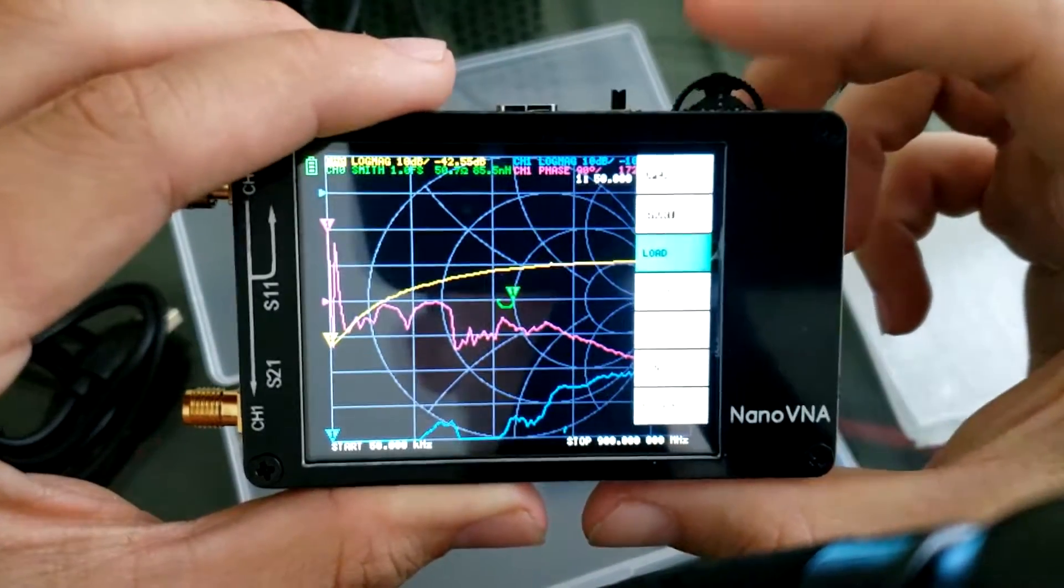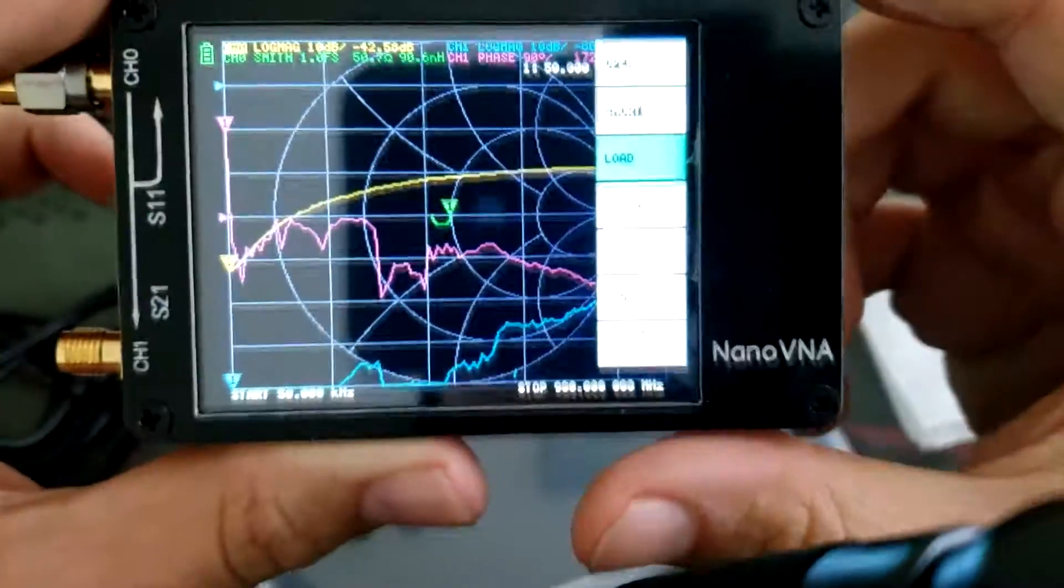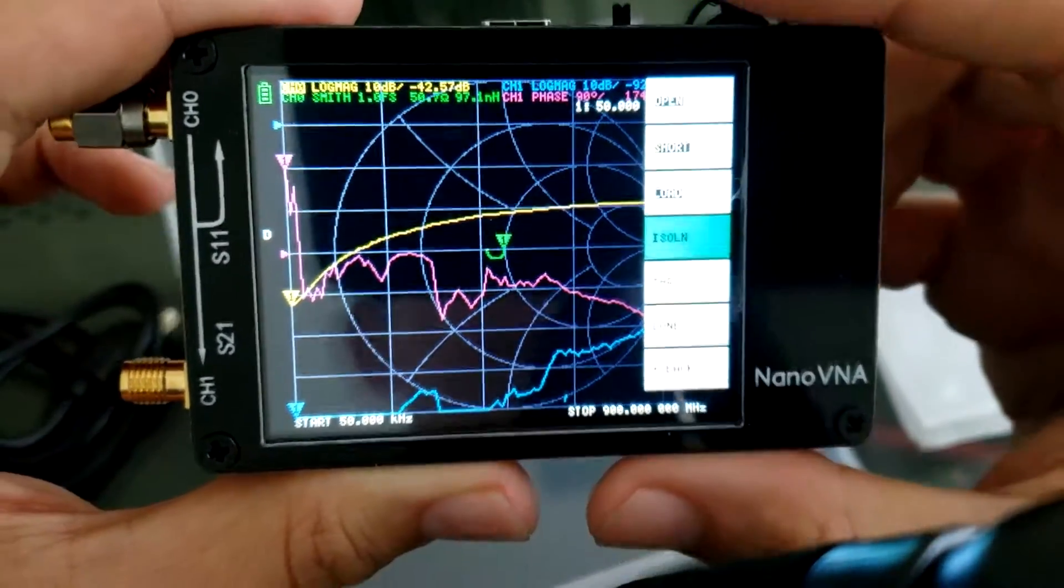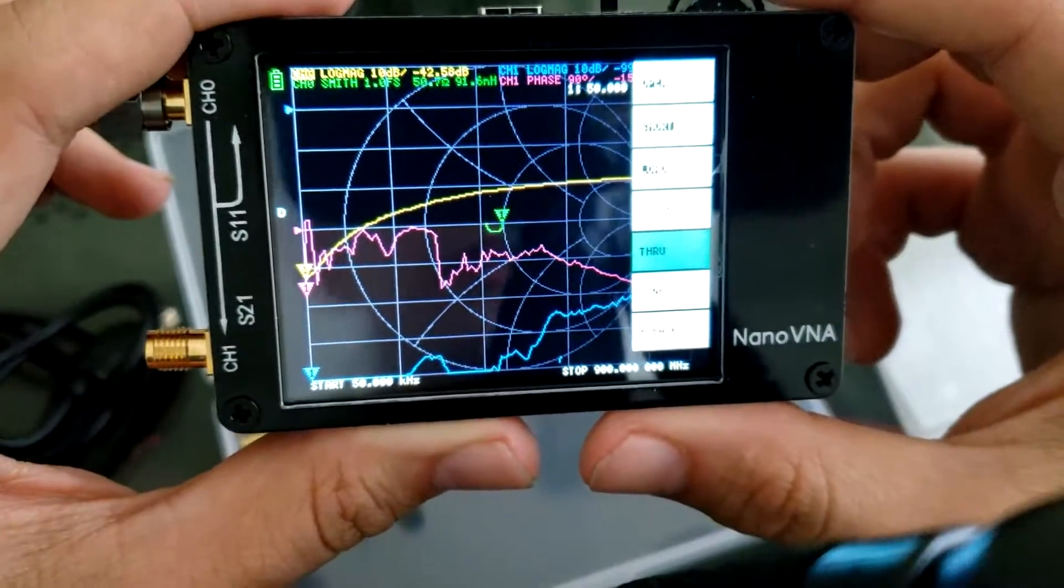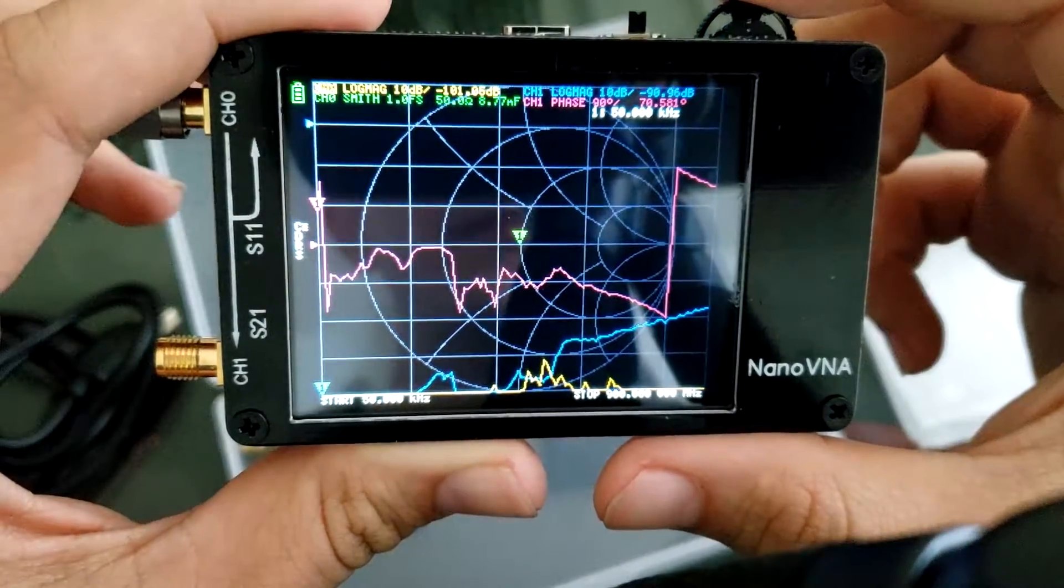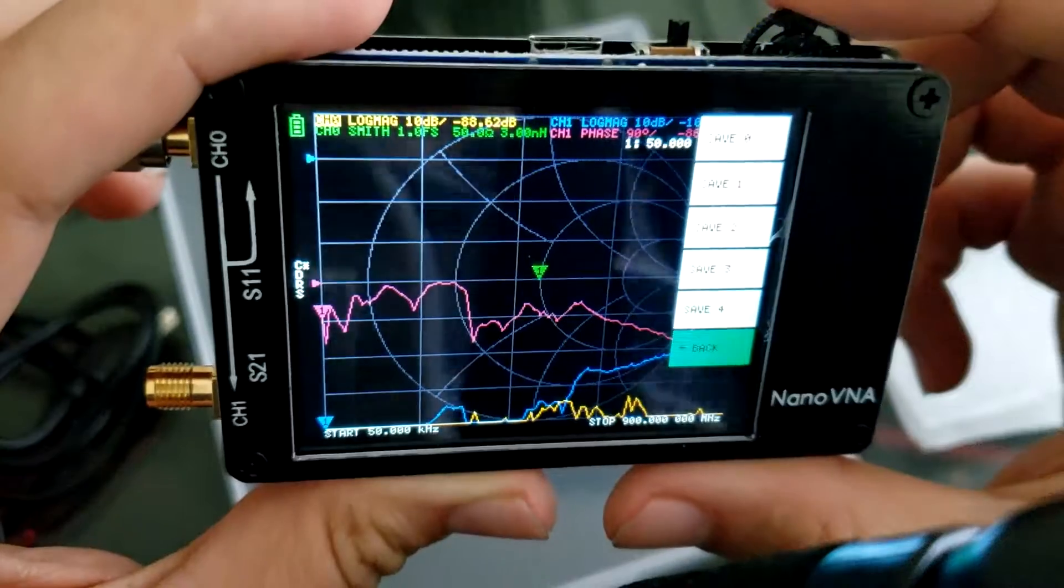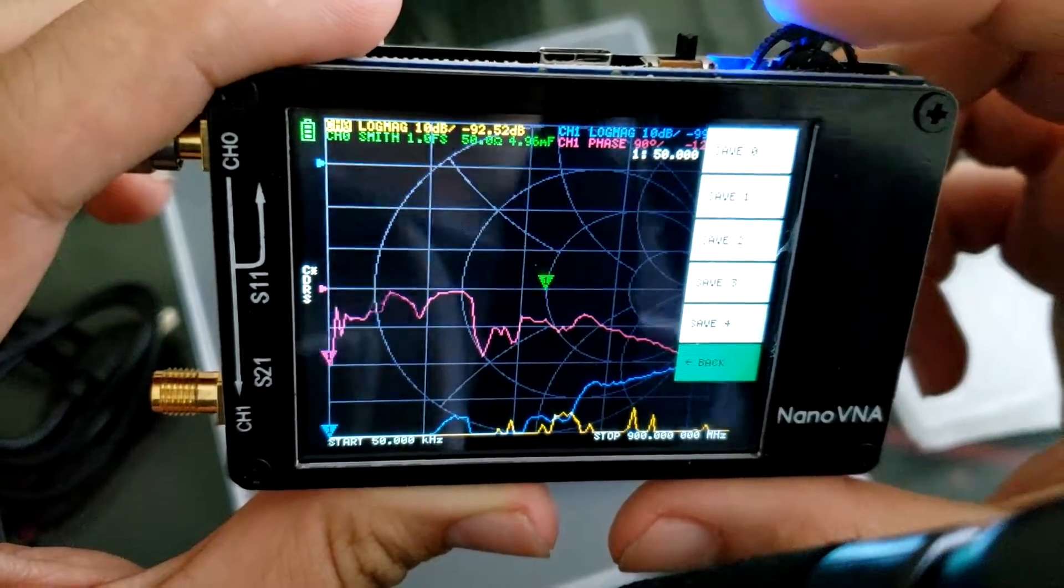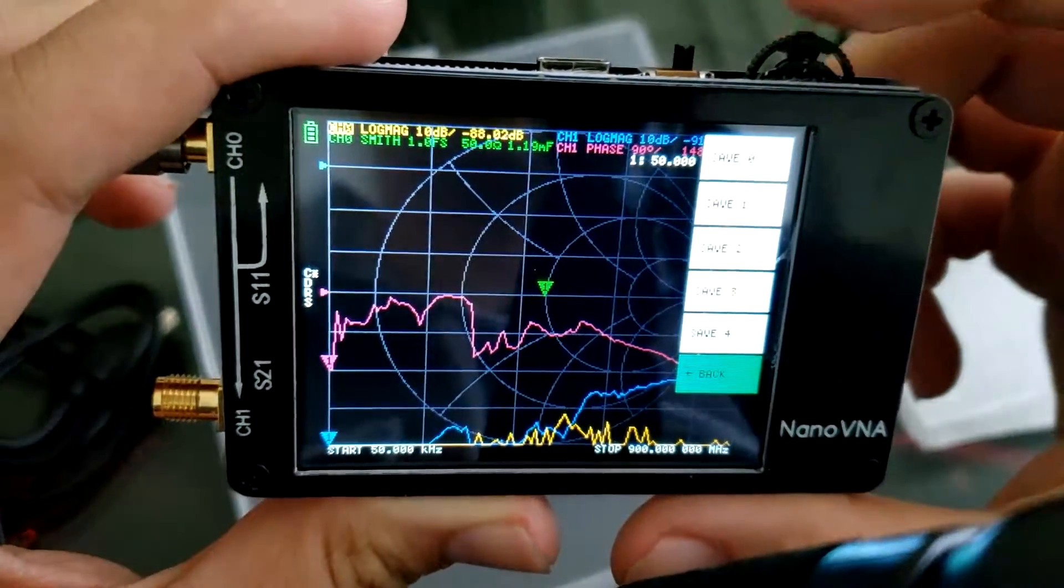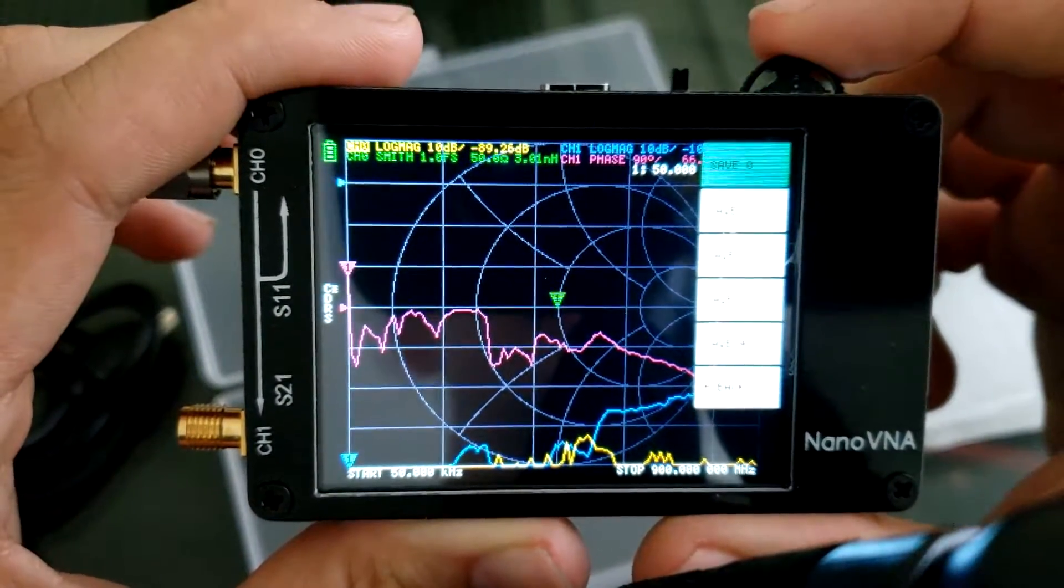For the last one will be the one with the load on it. The buttons aren't super responsive as you can see. There's load. Now we're gonna go ahead and go to done and save zero because you can save different calibrations.